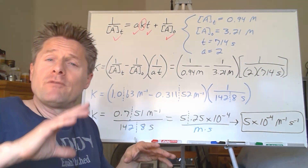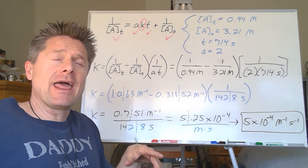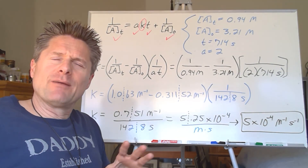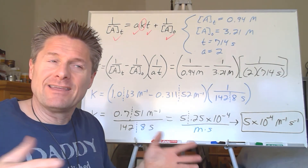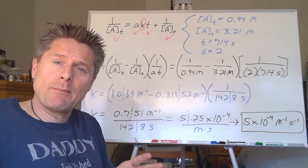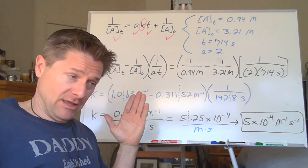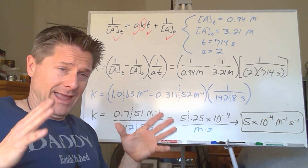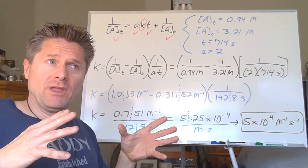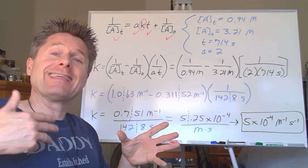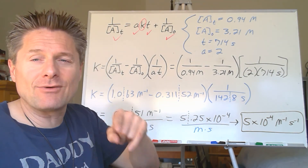Now that we've done zero, first, and second order reaction kinetics, I'm going to do a separate video just on half-lives. We'll take zero, first, and second order and derive an equation from the integrated rate equation that relates the half-life to the rate constant. It's going to be cool. You guys are awesome!